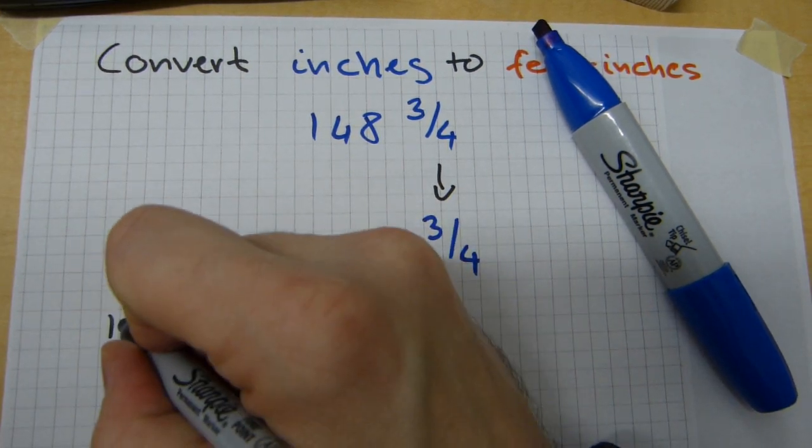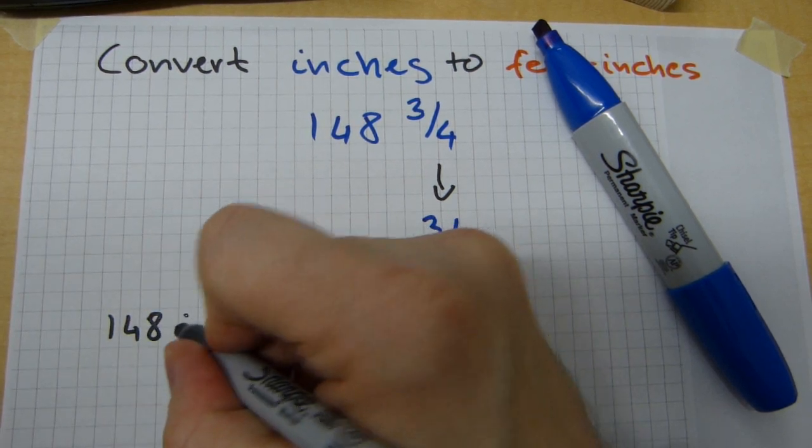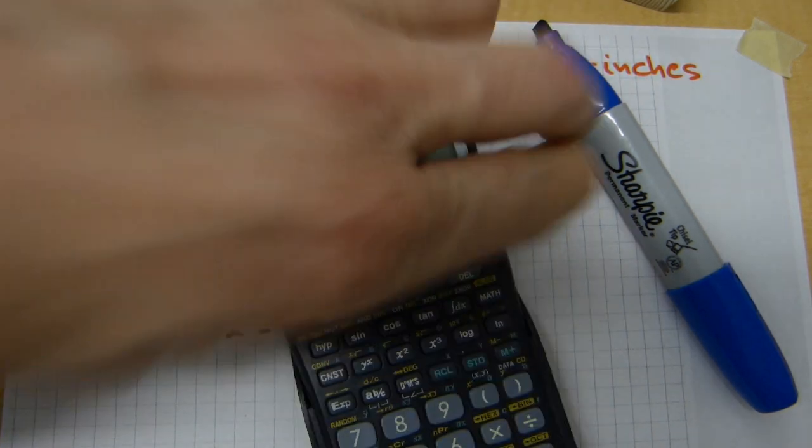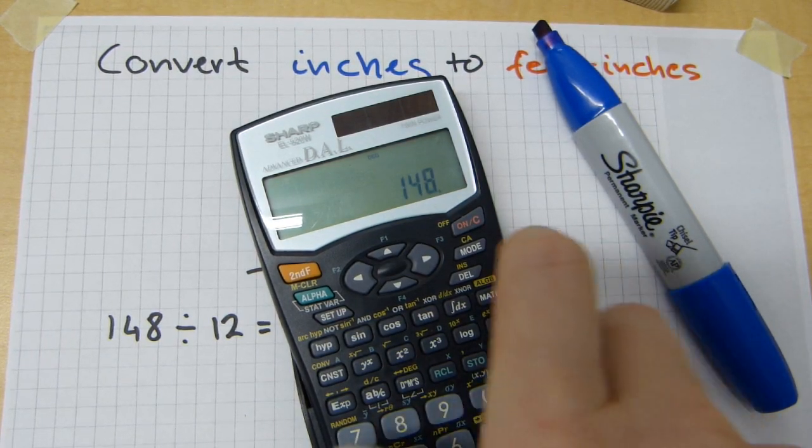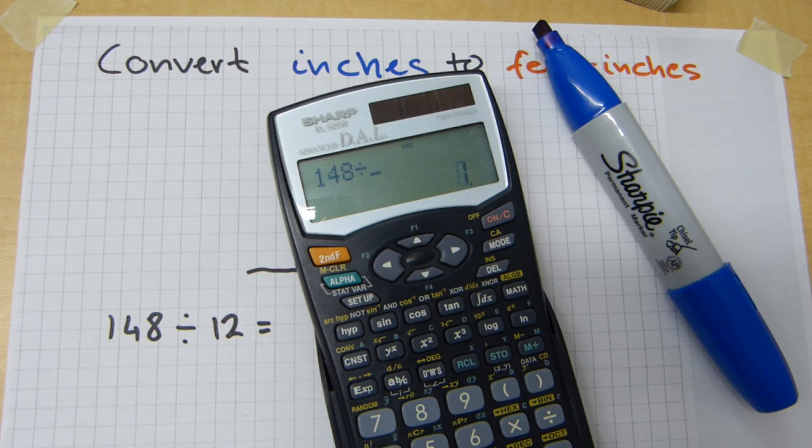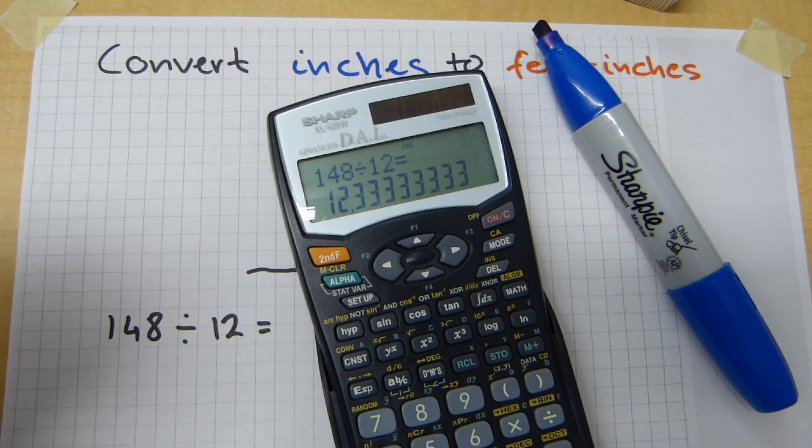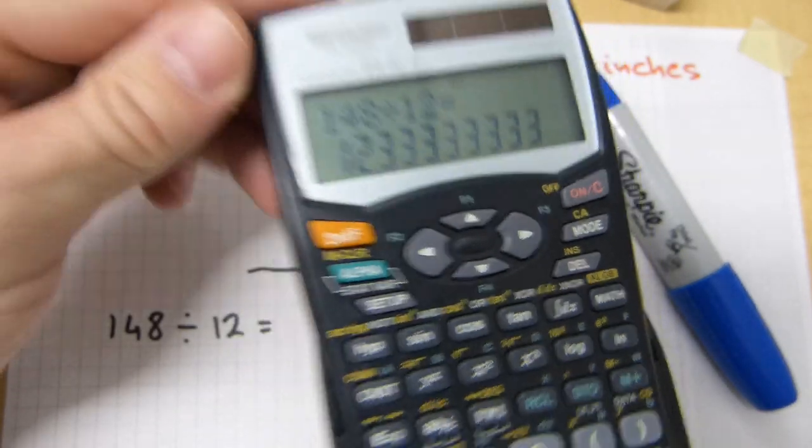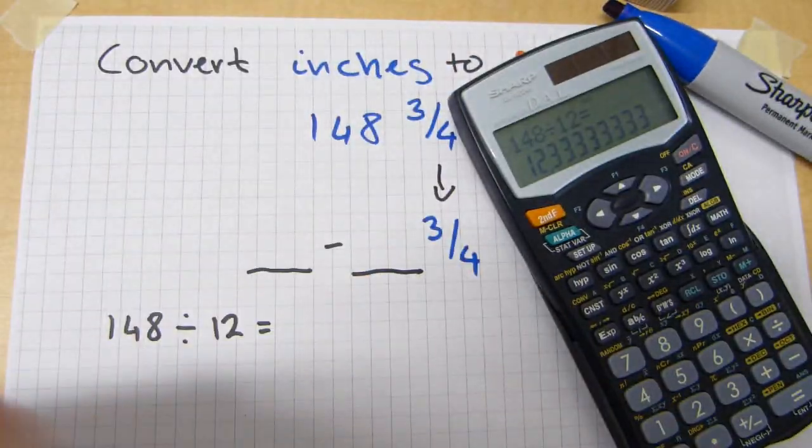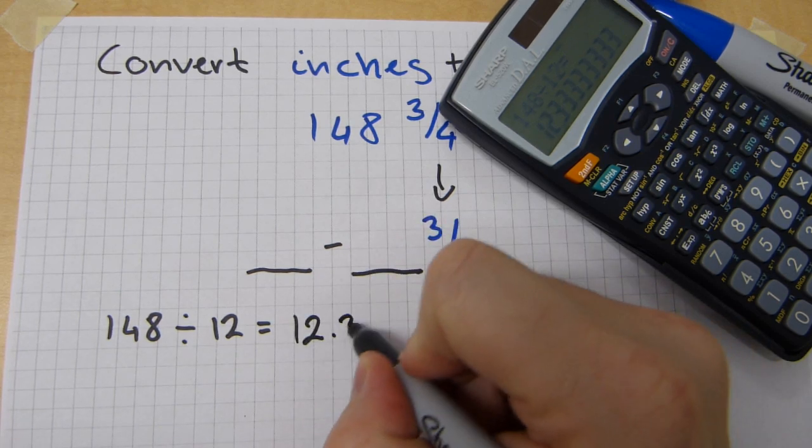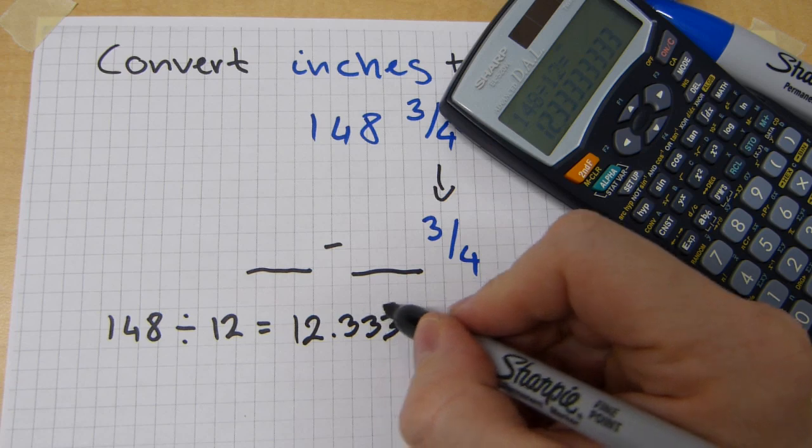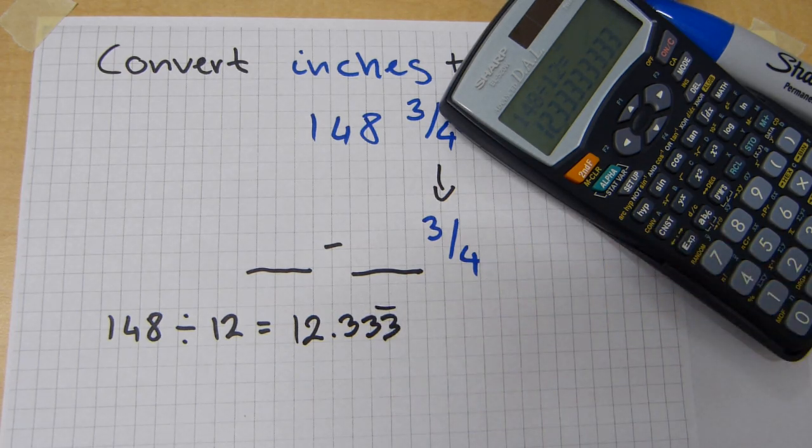148 needs to be divided by 12 and then press equals on a calculator. 148 divided by 12 equals that number. It is a decimal number, 12.33333. Let's write it down here. 12.333. It's a repeating decimal, so I'm just gonna draw an overbar over the 3, so that's a repeating digit.